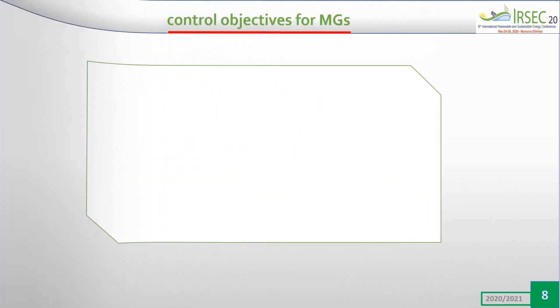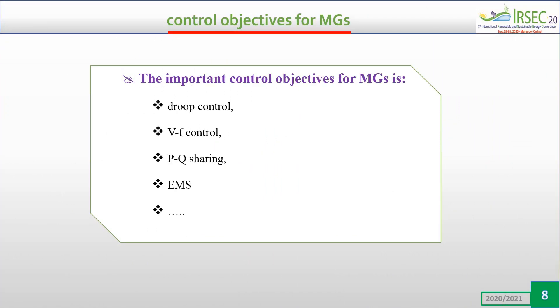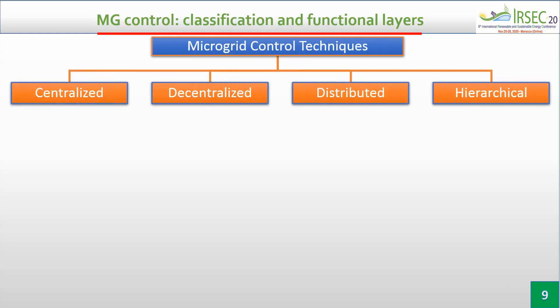Two important control objectives for microgrid are droop control, voltage and frequency control, active and reactive power sharing, and energy management systems. These objectives are accomplished by using one of four categories of control architecture. These categories are: centralized, decentralized, distributed, and hierarchical.